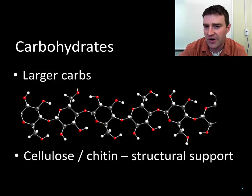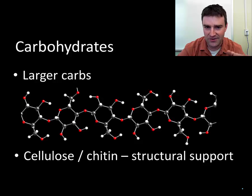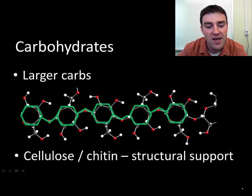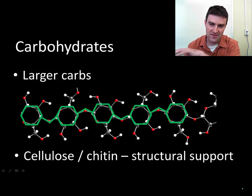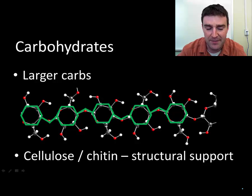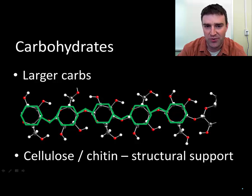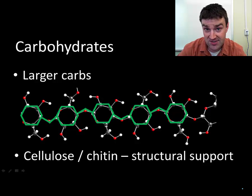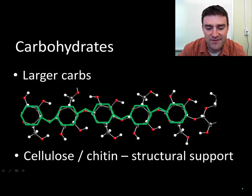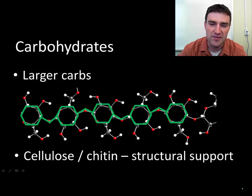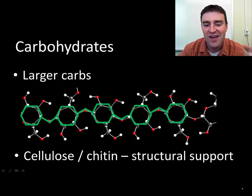There are also larger carbohydrates you can build. Looking at this structure, you can see it's really just a bunch of hexagons linked together by chemical bonds — simple monomers combined to build bigger polymers. This is cellulose; I'll also include chitin. Different organisms use different carbohydrates for structural support. Cellulose is in plants — if you've crunched on crunchy celery, you're crunching on cellulose. Chitin is found in fungi and bugs — if you've ever stepped on a cockroach, that crunch is the chitin.